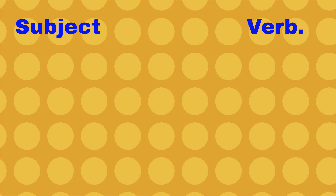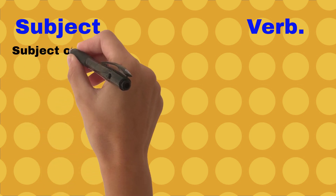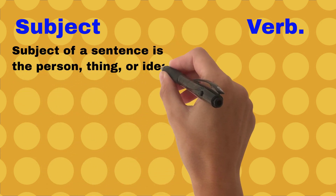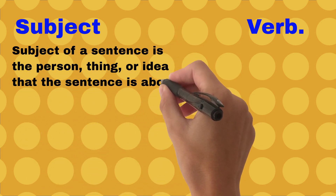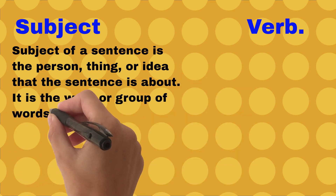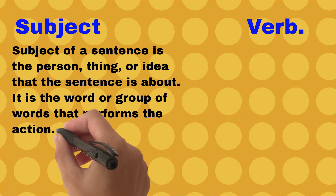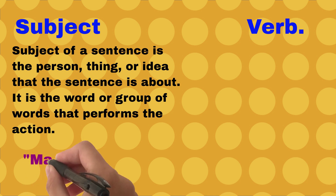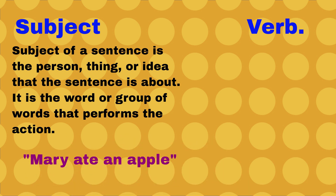To understand this, first we need to learn about subject and verb. The subject of a sentence is the person, thing, or idea that the sentence is about. It is the word or group of words that performs the action. For example, in the sentence 'Mary ate an apple,' the subject is Mary.